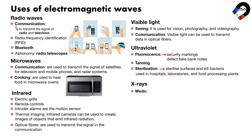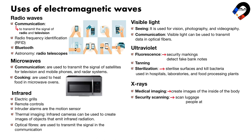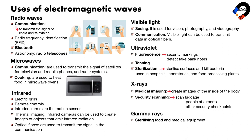X-rays. Medical imaging: X-rays are used to create images of the inside of the body and are used to diagnose diseases and injuries. Security scanning: X-rays are used to scan luggage and people at airports and other security checkpoints. Gamma rays: gamma rays can be used to sterilize food and medical equipment. Cancer treatment: gamma rays are used to kill cancer cells.